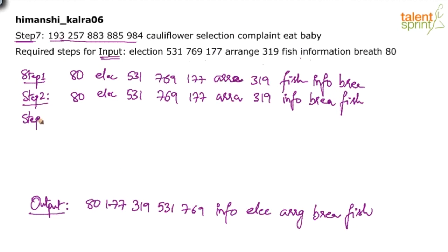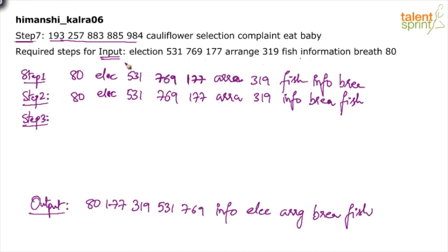One important point to remember while doing this rearrangement: always write each step in a properly aligned fashion. Write everything in exactly the same position so that if something is extra you know you've repeated it, or if something is missing you know you've skipped it. Otherwise, after doing seven or eight steps, if you realize you went wrong in step two, you'll have to redo everything from scratch. Avoid that trouble.